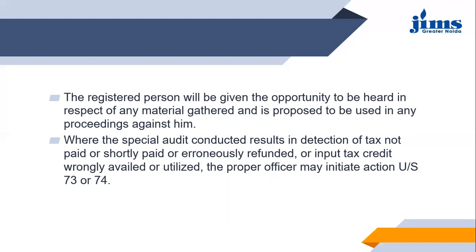Where the special audit results in detection of tax not paid, short paid, erroneously refunded, or input tax credit wrongly availed or utilized, the proper officer may initiate action under section 73 or 74. If the special audit detects short payment of taxes or discrepancy in input tax credit availed and utilized, such discrepancy will be dealt under section 73 or 74, which covers whether it is a fraud or not — to be taken up in the next sessions.